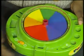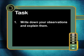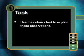Here are two questions to complete for your task. First, watch what happens when the color wheel is spun — write down your observations and explain them. Second, when a yellow object is placed in blue light it appears black, but when it is placed in cyan light it appears green — use the color chart to explain these observations. I hope you enjoyed this lesson. Goodbye and see you next time when we'll investigate how electromagnetic radiation interacts with matter.